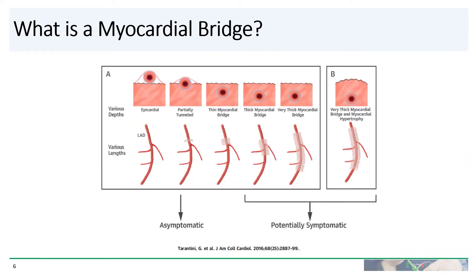So what is a myocardial bridge? The major coronary arteries normally lie on the surface of the heart — hence they are sometimes called epicardial coronary arteries. But sometimes part of the coronary artery may dip into the muscle of the heart, and the part of the myocardium overlying this coronary artery is called a myocardial bridge.